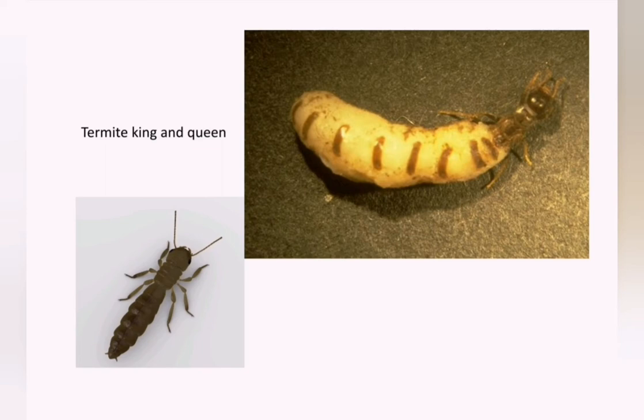The king's job is to continuously mate with the queen so she can lay thousands of eggs. You can see the queen's abdomen is very large. Her job is to stay in one place in the middle of the nest and lay eggs — she doesn't go out to find food. The worker termites go out, find food, and bring it back to feed the king, the queen, and the growing larvae. And then there are soldiers that bring protection to the nest.